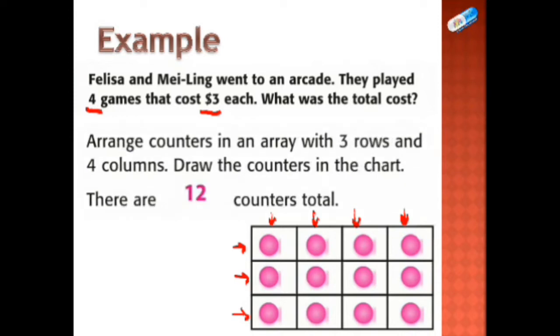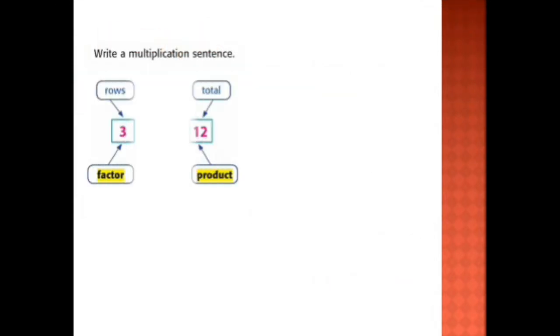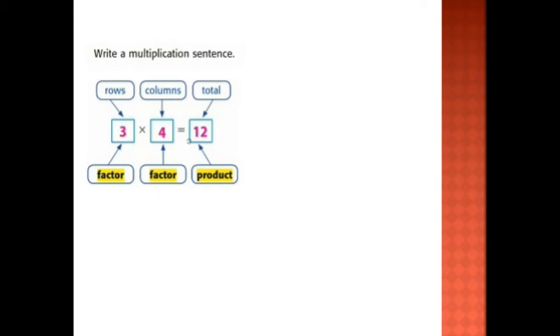This means that four multiplied by three equals twelve. We know that four times three equals twelve from the times table of four or three. So if we want to write a multiplication sentence, we will write three times four equals twelve — three means the three rows and four is for the four columns, and the total is twelve.